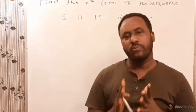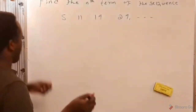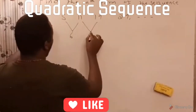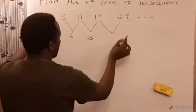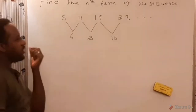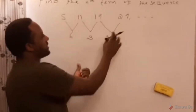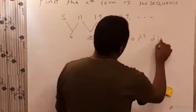So let me find the difference of the sequences. The difference between the first and second terms is 6, the difference of the next is 8, and the next is 10. These are called the first differences of the sequence.